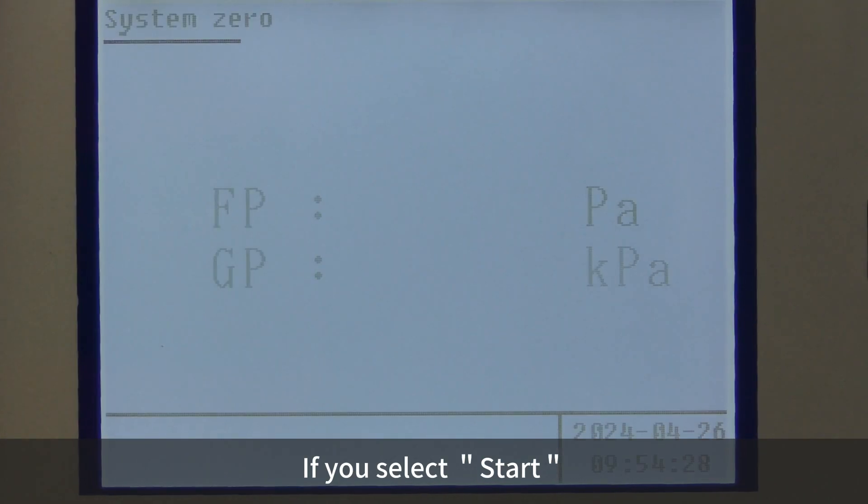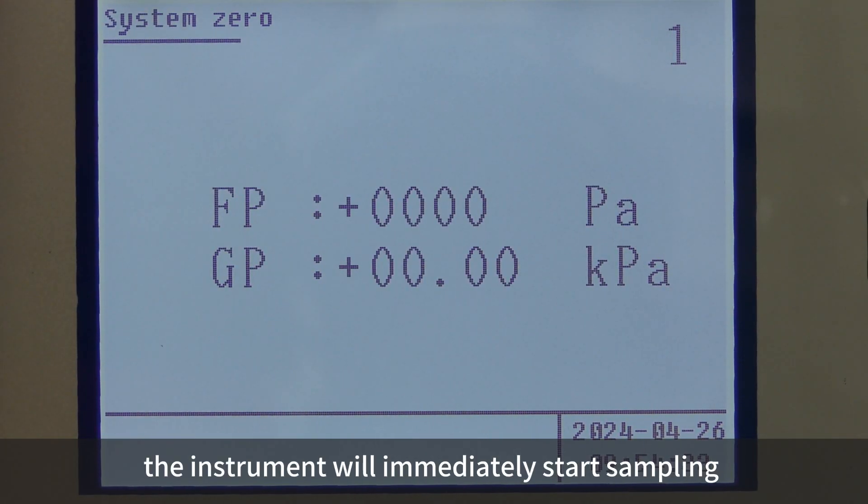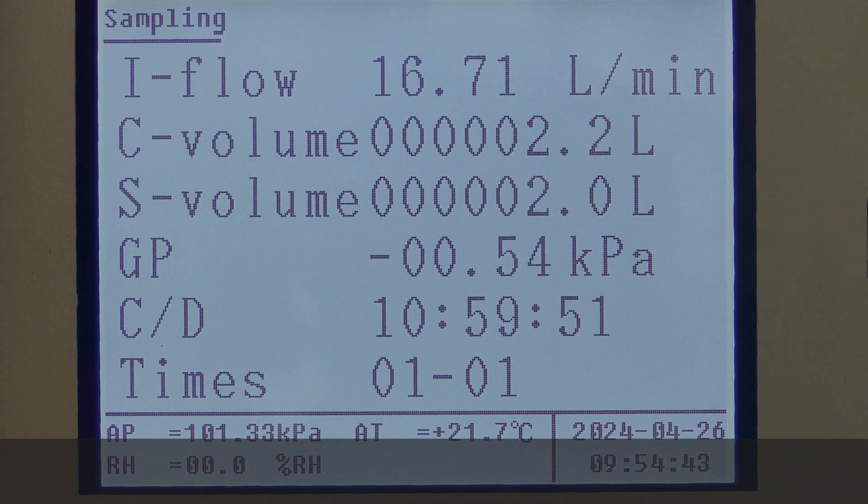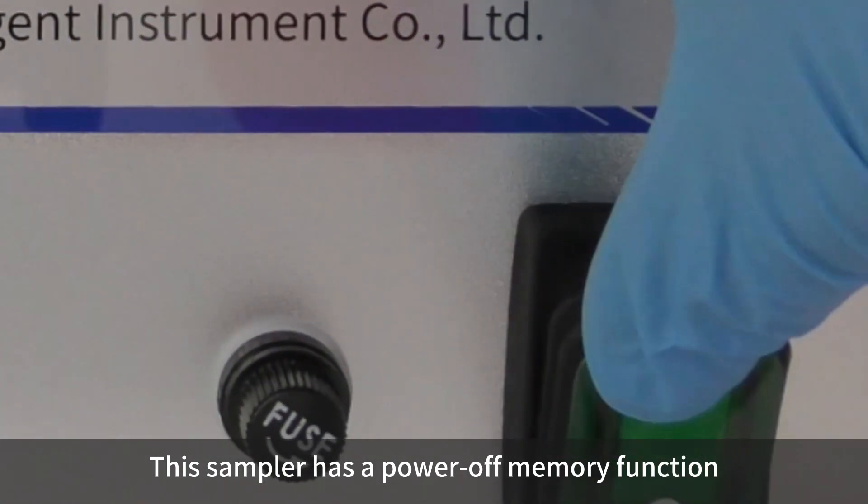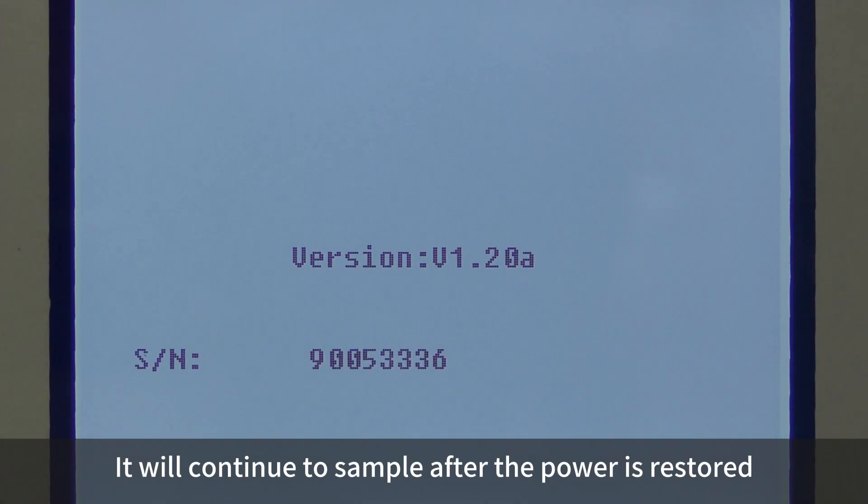If you select Start, the instrument will immediately start sampling according to the current parameter settings. This sampler has a power-off memory function. It will continue to sample after the power is restored.